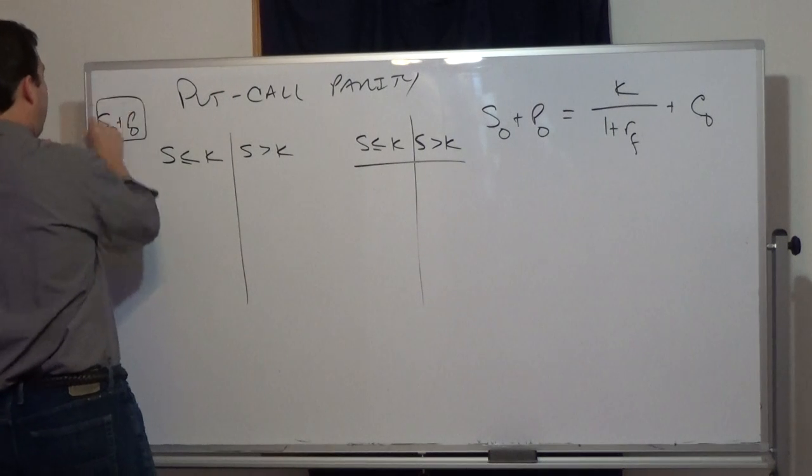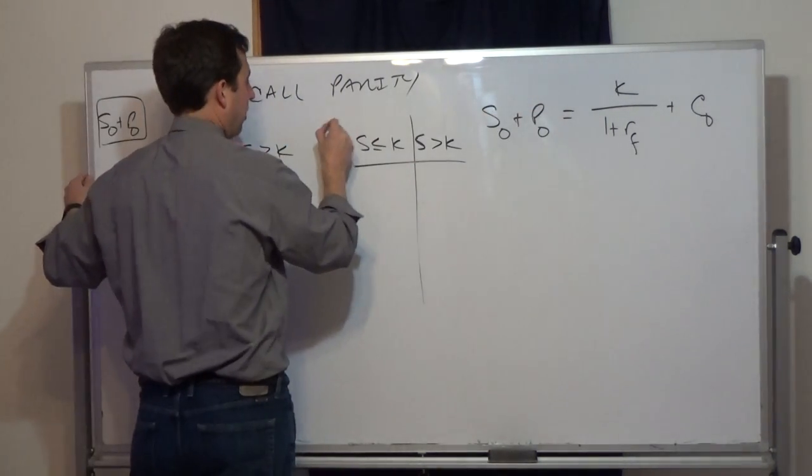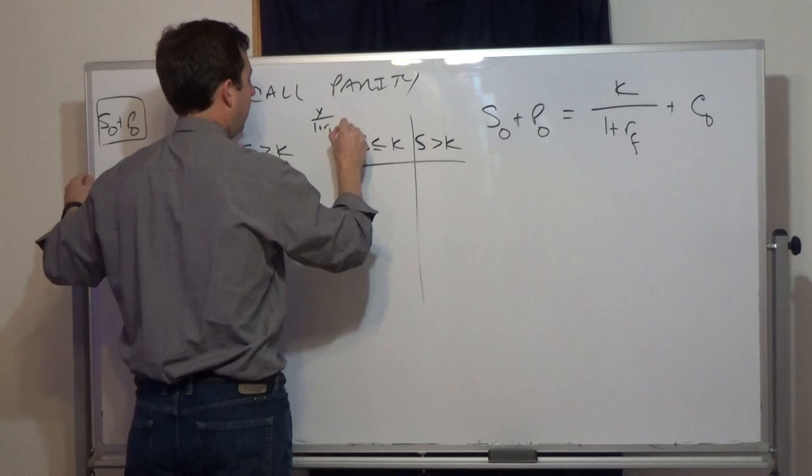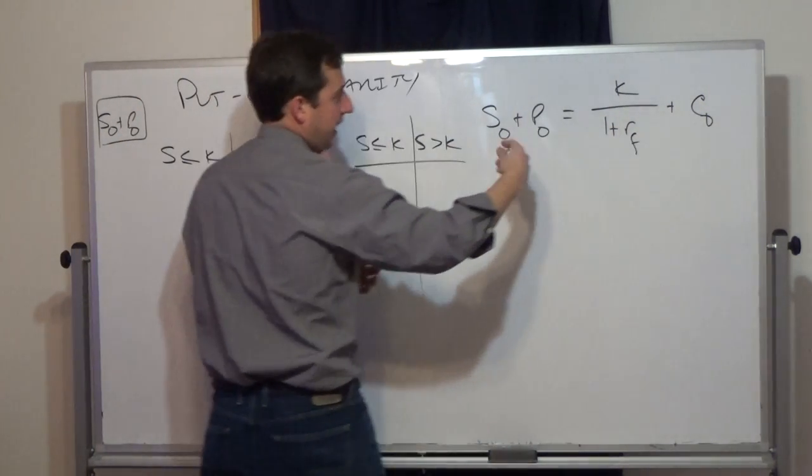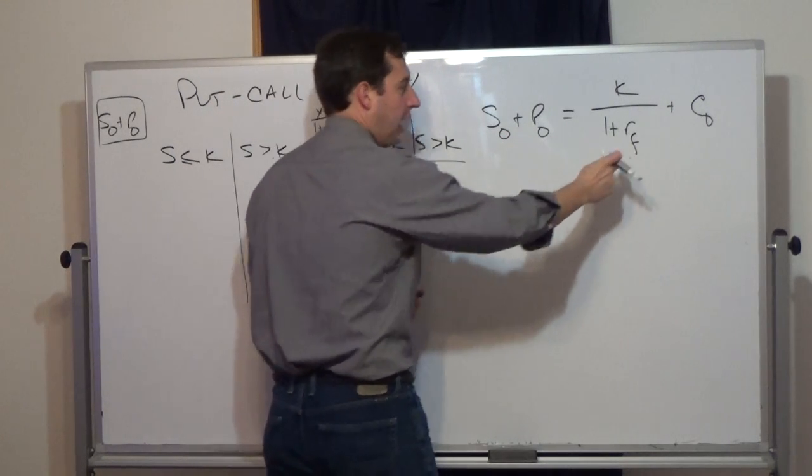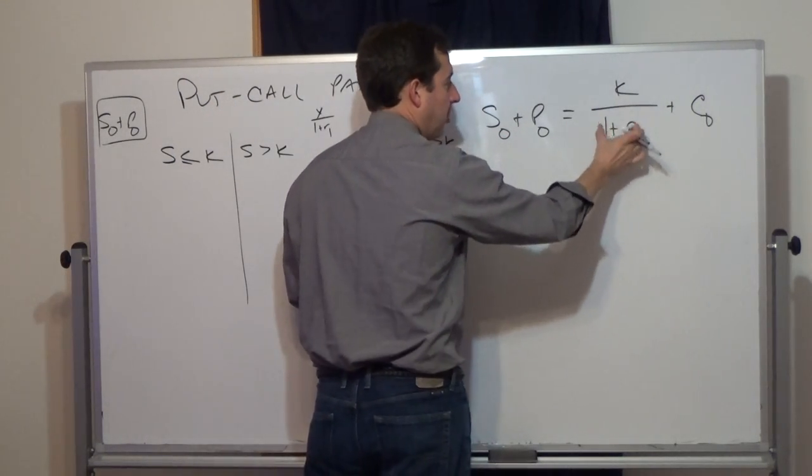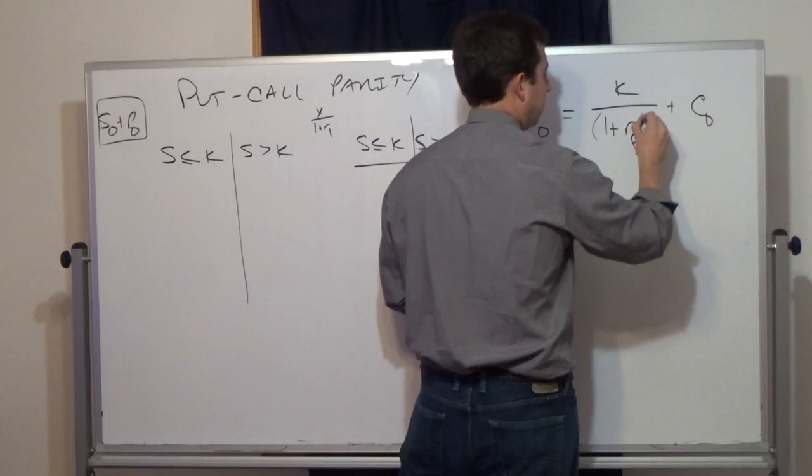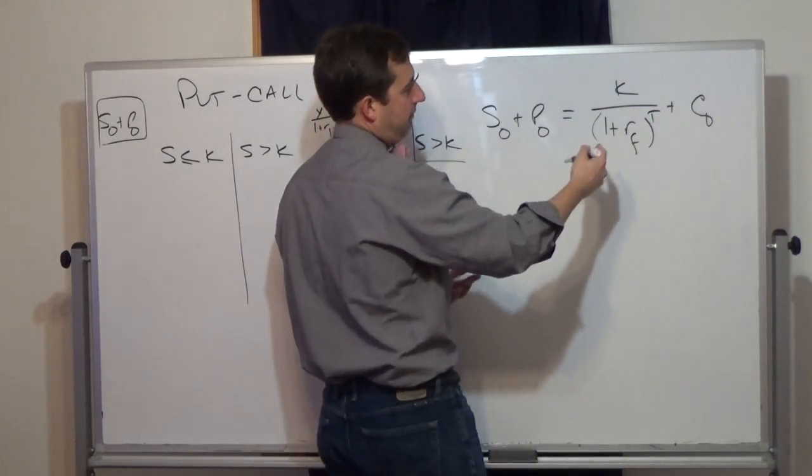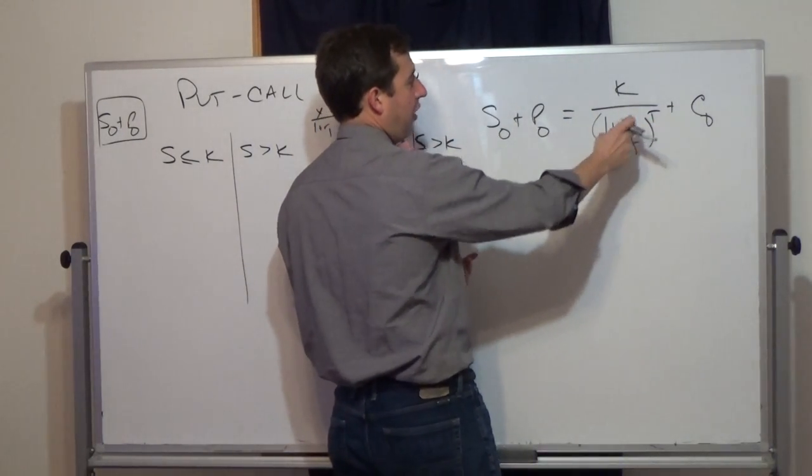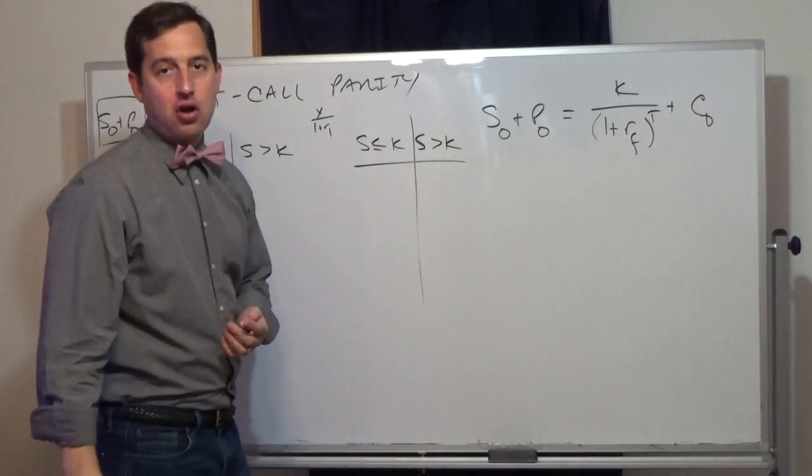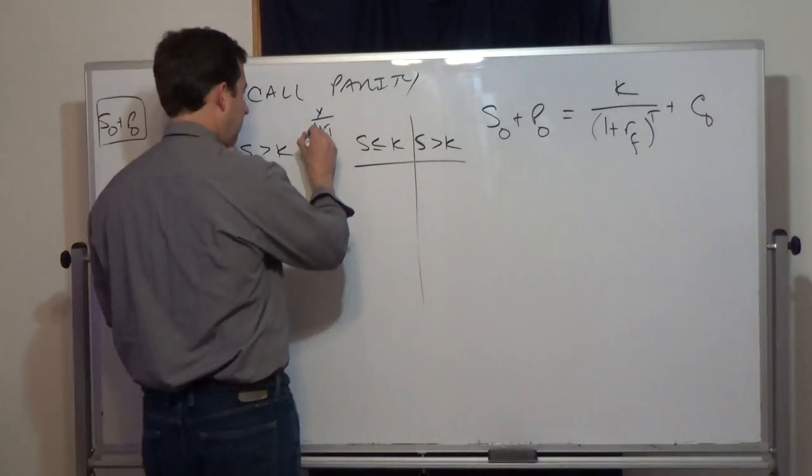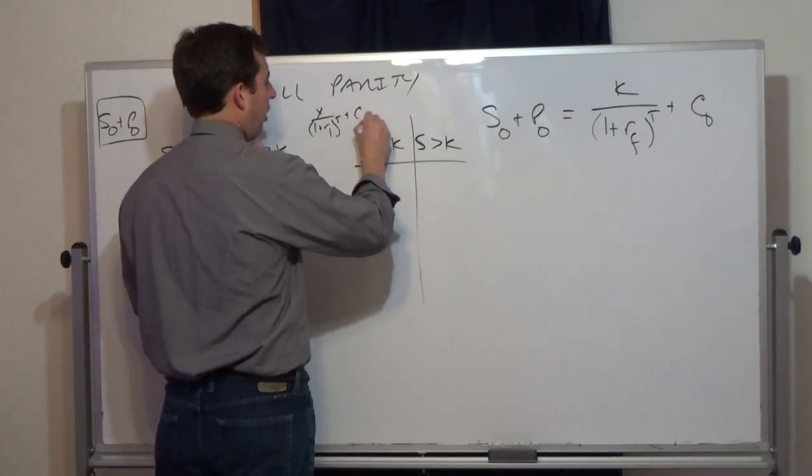We're going to look at the payoff from buying a bond and a call. This is X, and this would be the risk-free rate over that time period. I should note that this is the present value over the same period. In other words, this bond matures at the same time as the call and put option, T plus the call option.